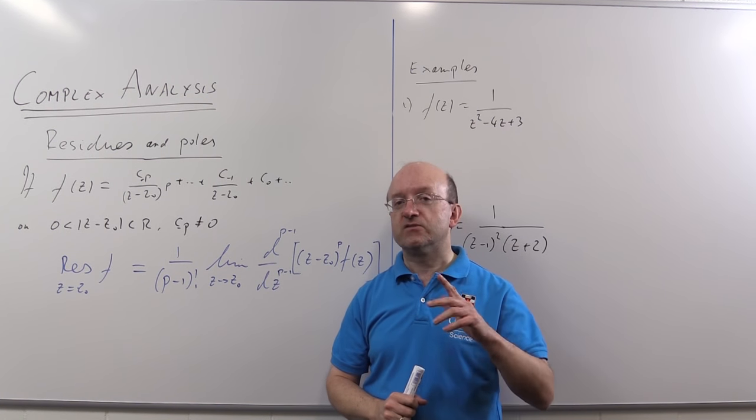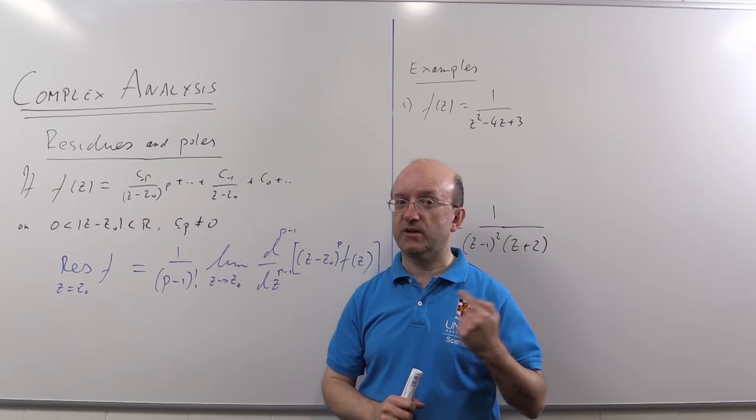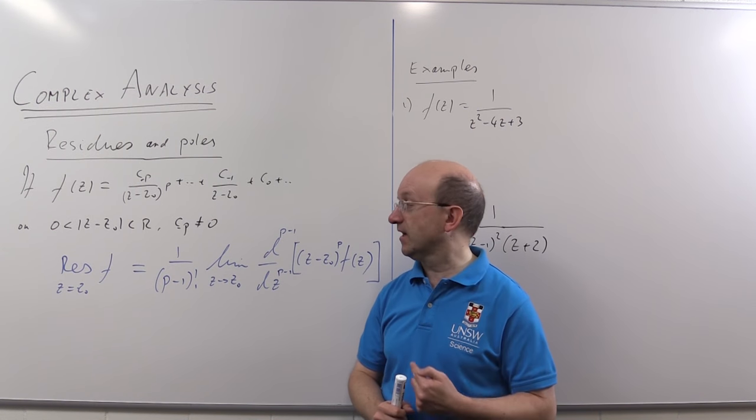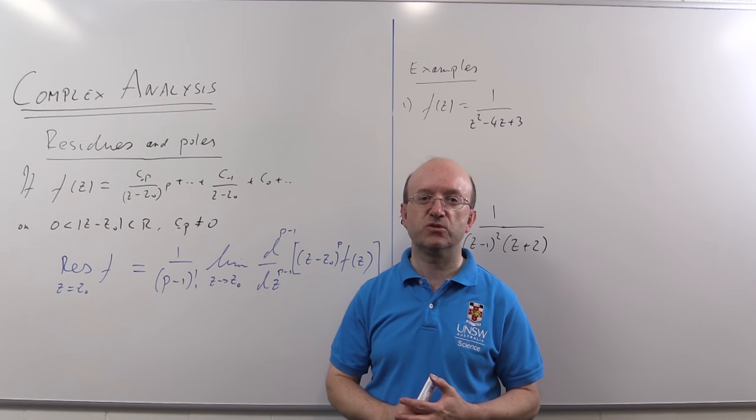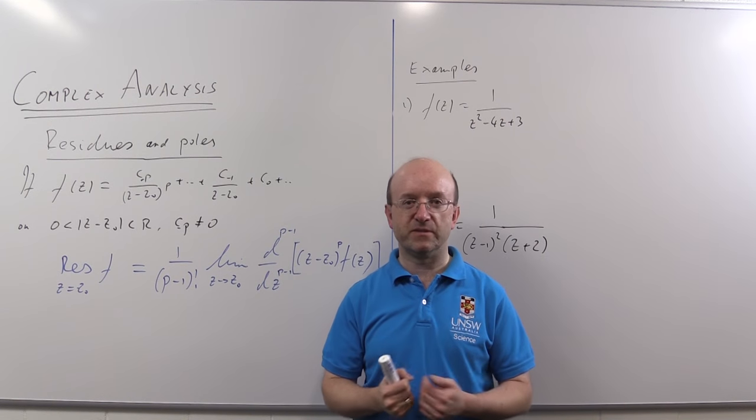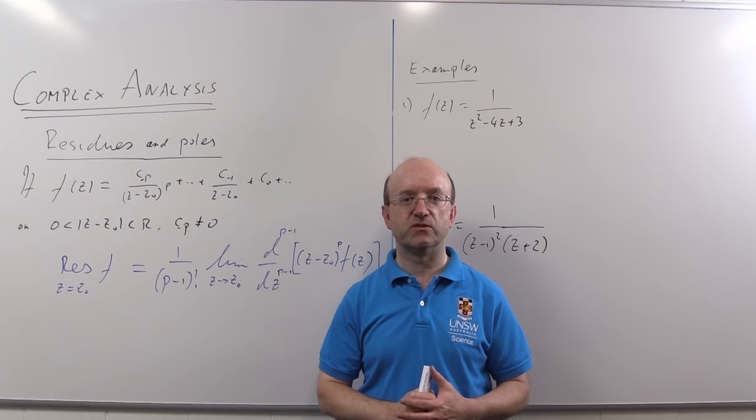For higher order poles, the proof that a thing is of order P, which is just taking the limit of this term here without differentiating and finding something finite and non-zero, is a different calculation to finding the residue. I'll show you that in an example. So be aware, simple poles, one limit finds both residue and gives you a proof of the order. Any higher order pole, you've got to technically do two different limits, or use the zero accountancy method that I talked about in the video on zeros and poles.